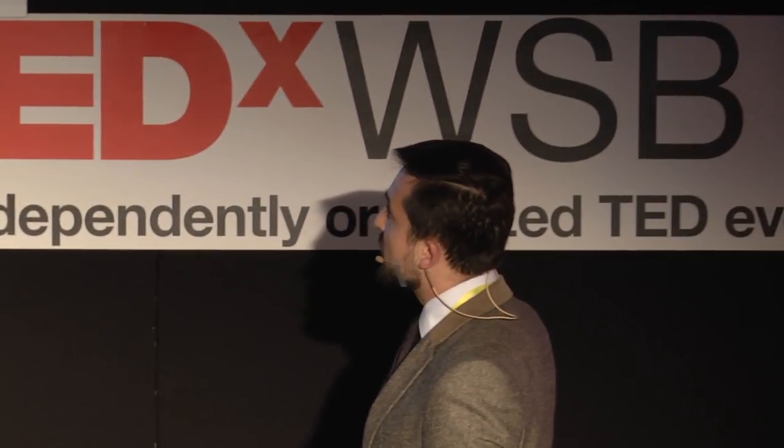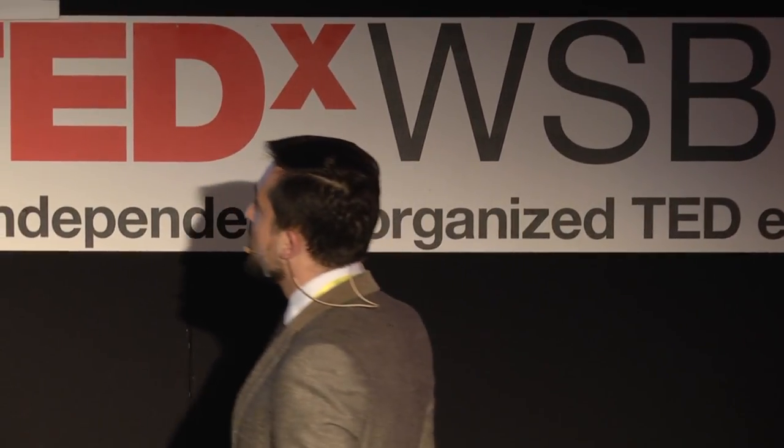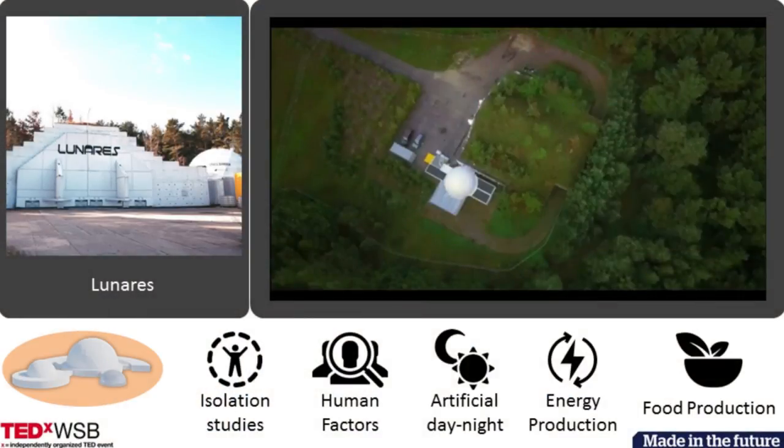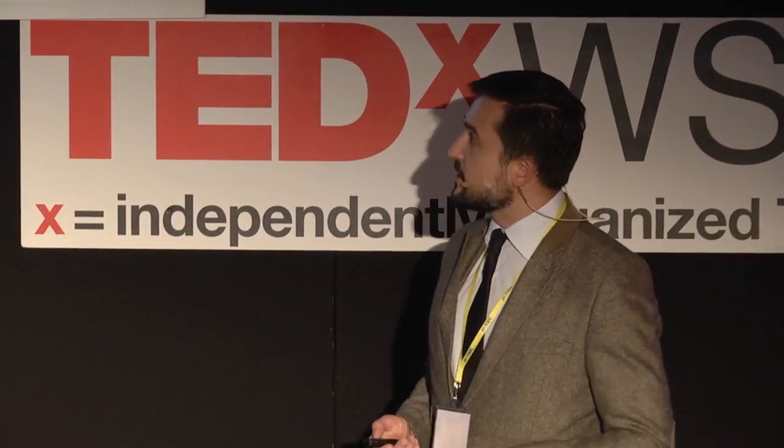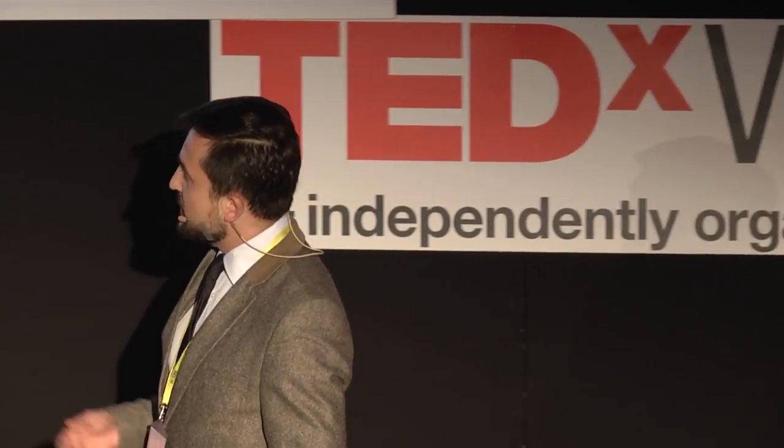We built one habitat here on Earth — it's an analog habitat. Space architects do that to test a lot of things that could go wrong in space. The habitat is called Lunares. It's located here in Poland. We built it last year, and we are still developing it year after year. Its main purpose is to isolate teams of scientists and see how they operate and live with each other in isolation.